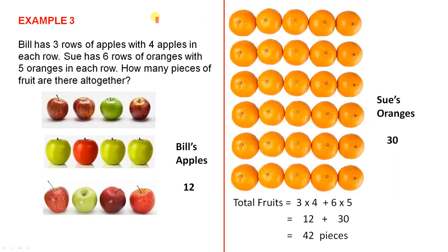Example three. Bill has three rows of apples with four apples in each row. So there's one, two, three rows. Each row has four apples. Sue has six rows of oranges with five oranges in each row. One, two, three, four, five, six rows.